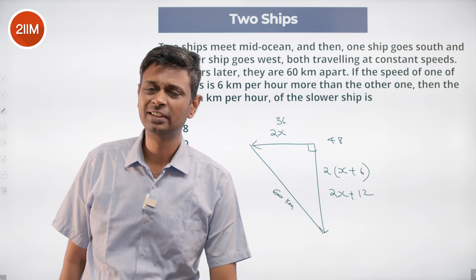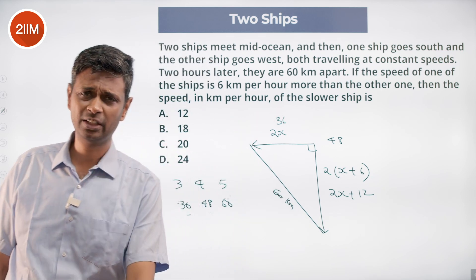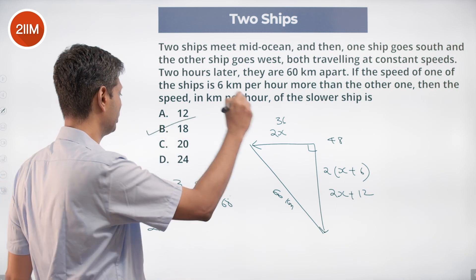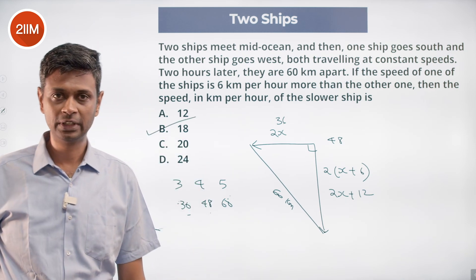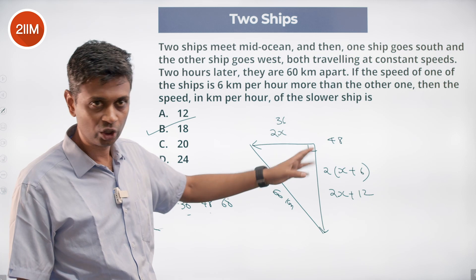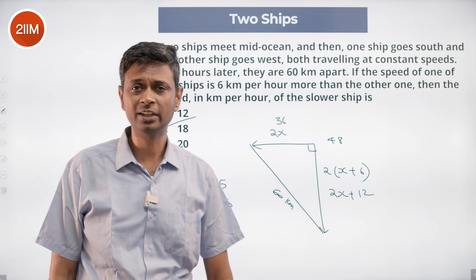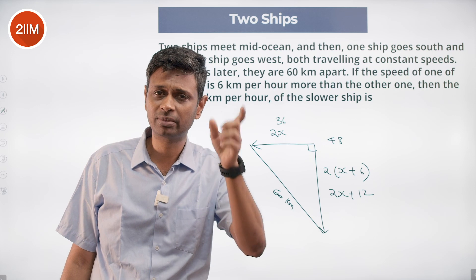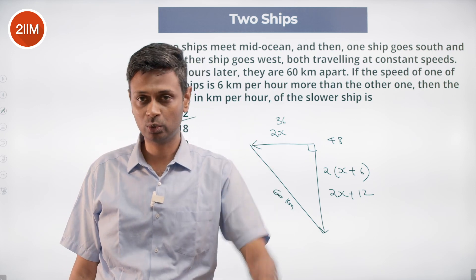36 kilometers in two hours - in one hour it travels at a speed of 18 kilometers per hour. 18 kilometers per hour into 2 is 36, 24 kilometers per hour into 2 is 48. 36-48-60 is a right triangle, Pythagorean triplet. We are through!